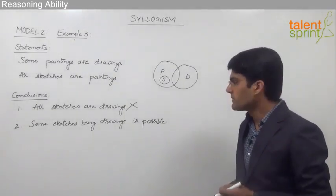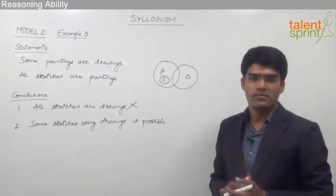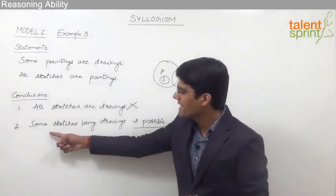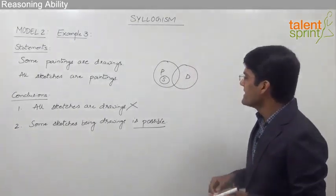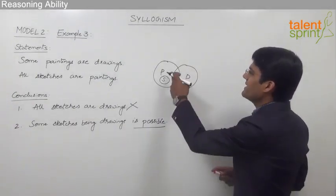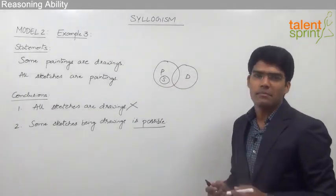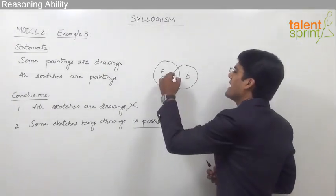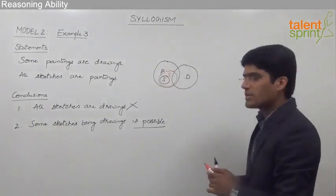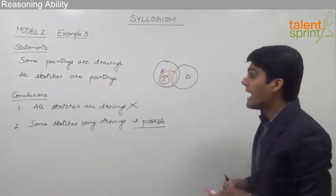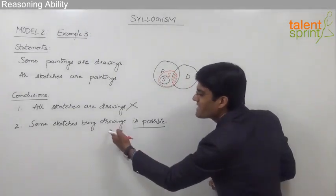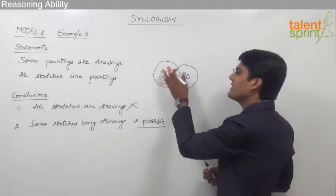The second conclusion is 'some sketches being drawings is possible.' This is a possibility, so we need to find at least one diagram where some sketches can be drawings. In the basic diagram shown by the black circles, sketches and drawings are disjoint. However, if we redraw sketches — as shown by the red circle — so that all sketches are still inside paintings but now also overlap a little with drawings, we find that some sketches can indeed be drawings, and this still satisfies both given statements.